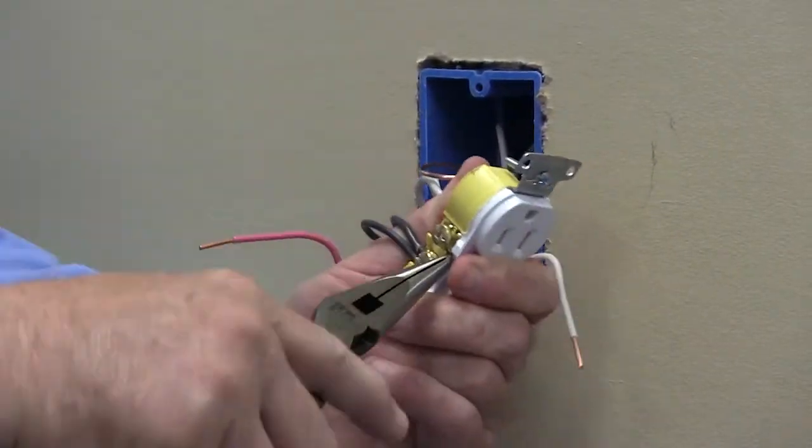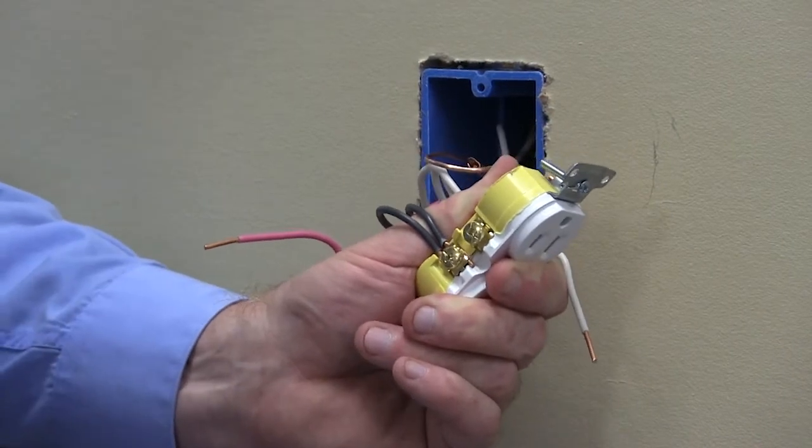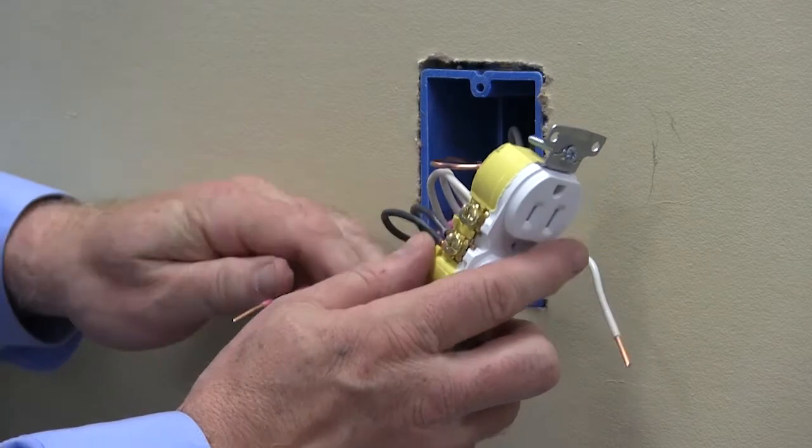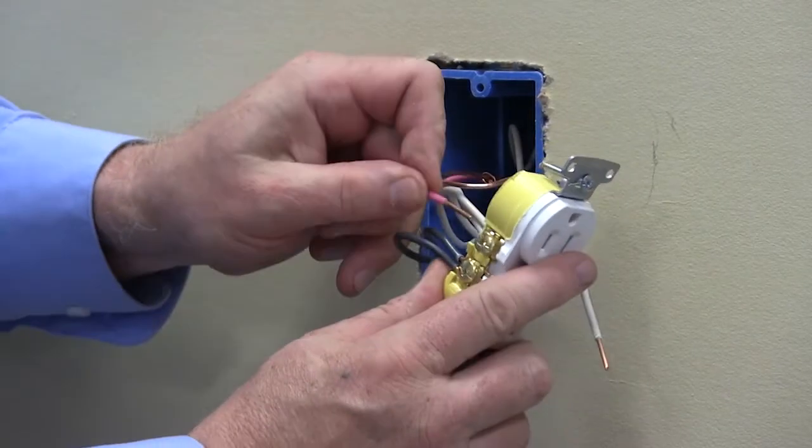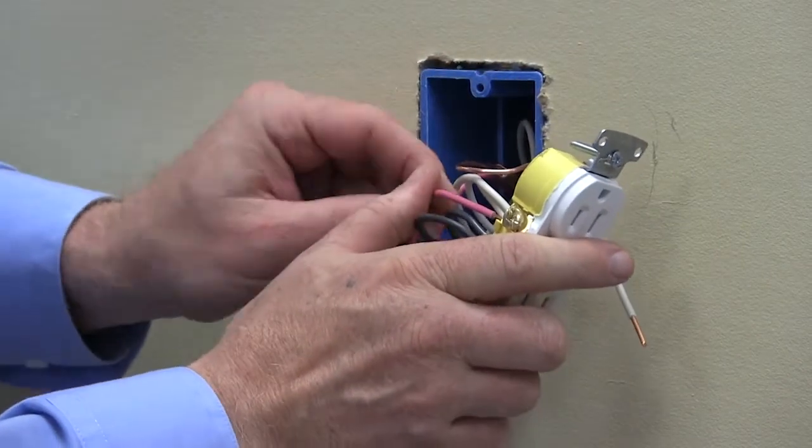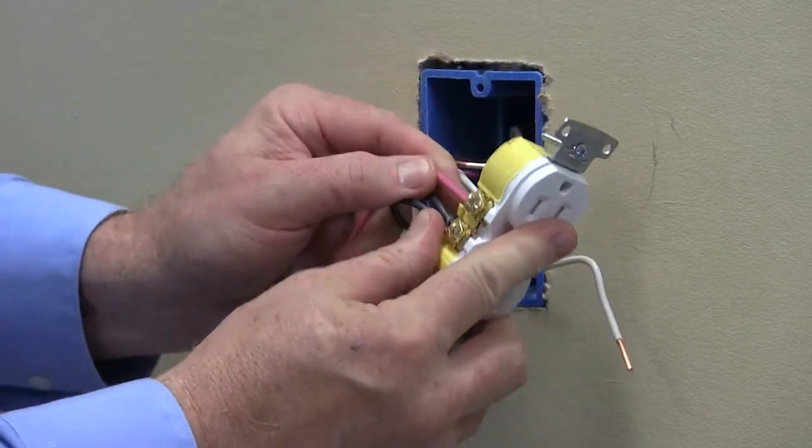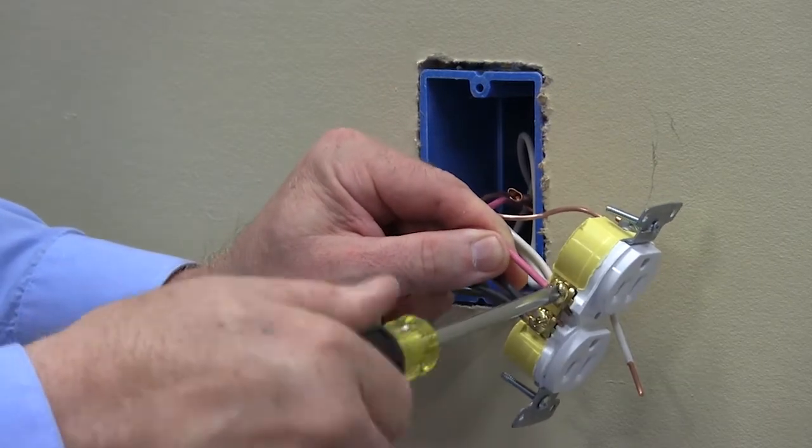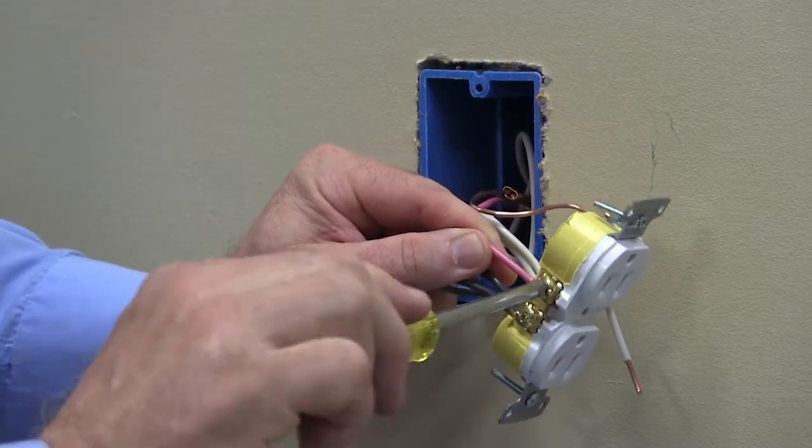Now, we would like to show how to split wire this receptacle. Break off the break off tabs as you would typically do for split wire. We have already terminated the bottom half of the receptacle with the power in and downstream feed through. Using the red wire, terminate the top half of the receptacle for split wire circuit control.